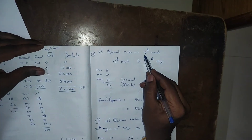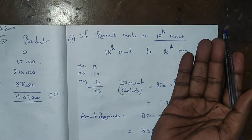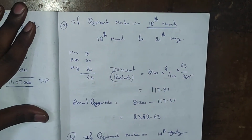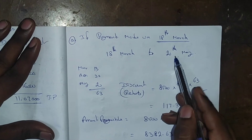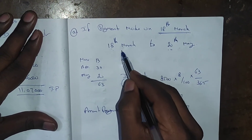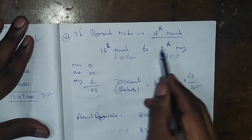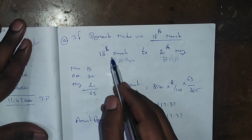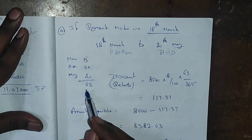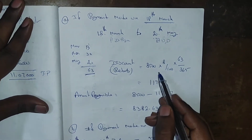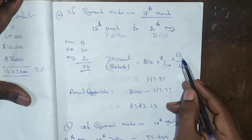The first preferred date is 18th March. Since 18th March is earlier than the Average Due Date of 20th May, you are paying early and are eligible for a discount. Calculate the number of days between 18th March and 20th May: remaining days in March is 13 days, April is 30 days, up to 20th May is 20 days — total 63 days.